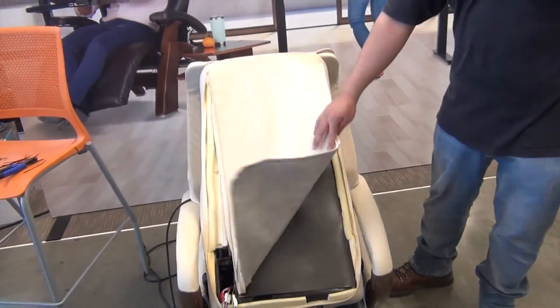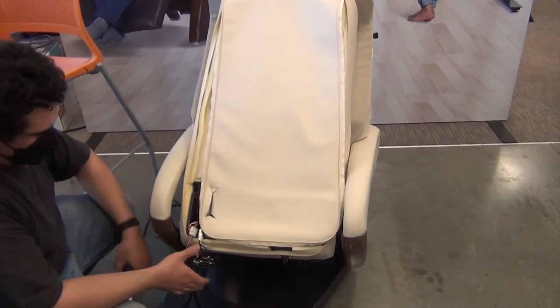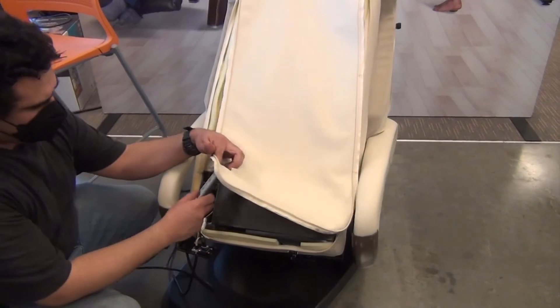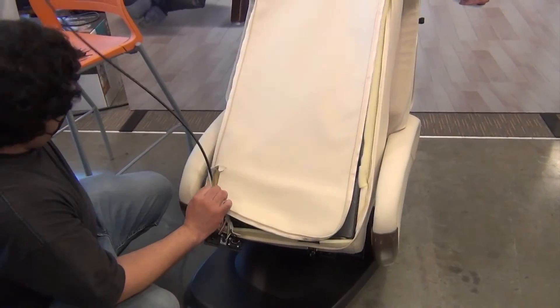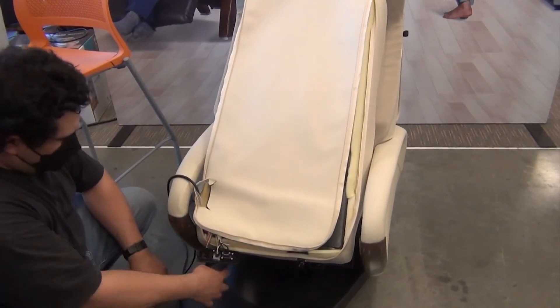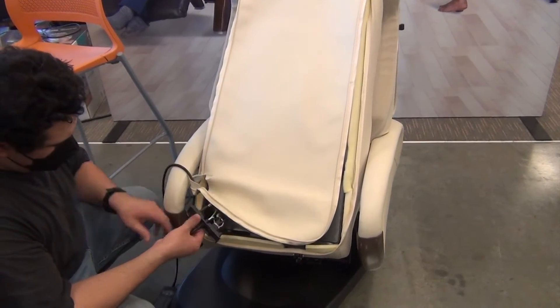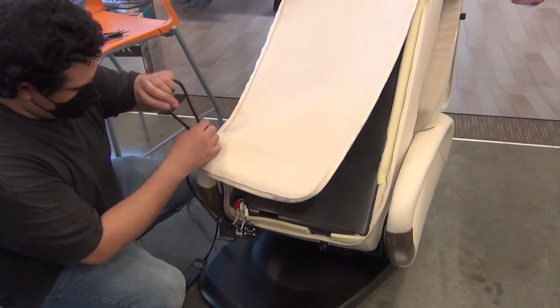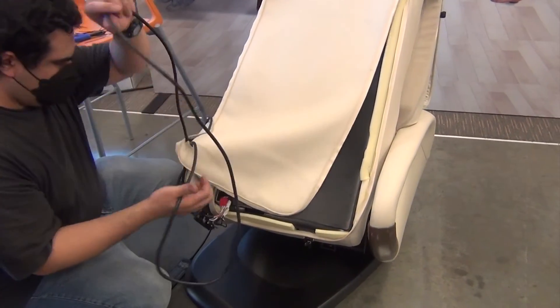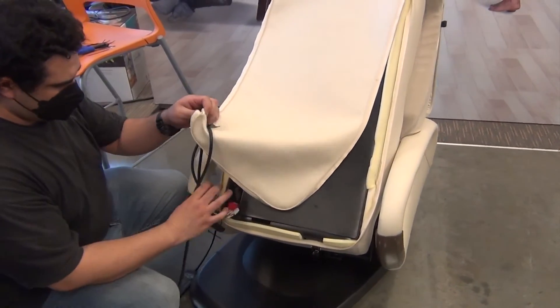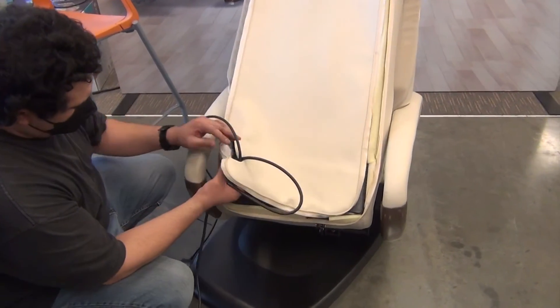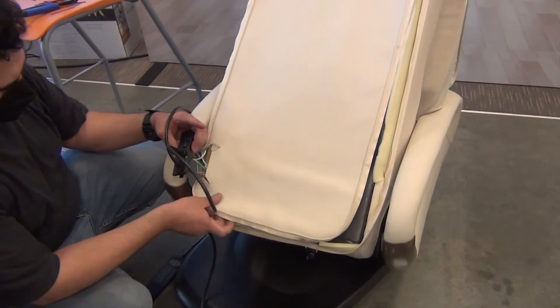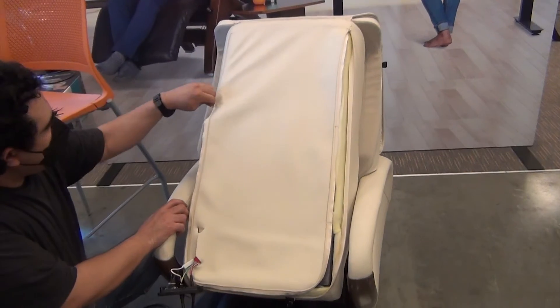Flip the backrest upholstery back into position. Then, feed the remote, the power cord, and the power panel through the hole in the upholstery. Next, close the backrest zippers.